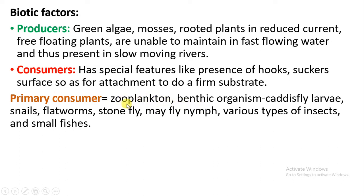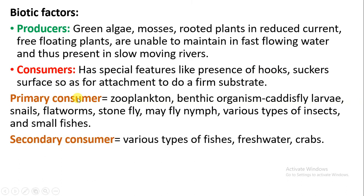The primary consumers include zooplankton, which are dependent on phytoplankton (the producers). Benthic organisms are also primary consumers — they live towards the riverbed and include caddisfly larvae, snails, flatworms, stonefly, mayfly nymphs, various insects, and small fishes, all of which are dependent on producers.